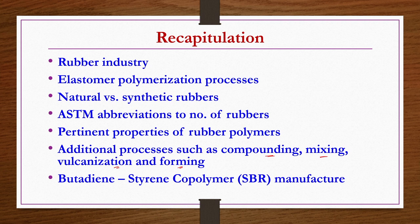Additional processes such as compounding, mixing, vulcanization, and final forming of rubber products were discussed in the previous lecture. We concluded that lecture by discussing the manufacturing of SBR, that is butadiene styrene copolymer.